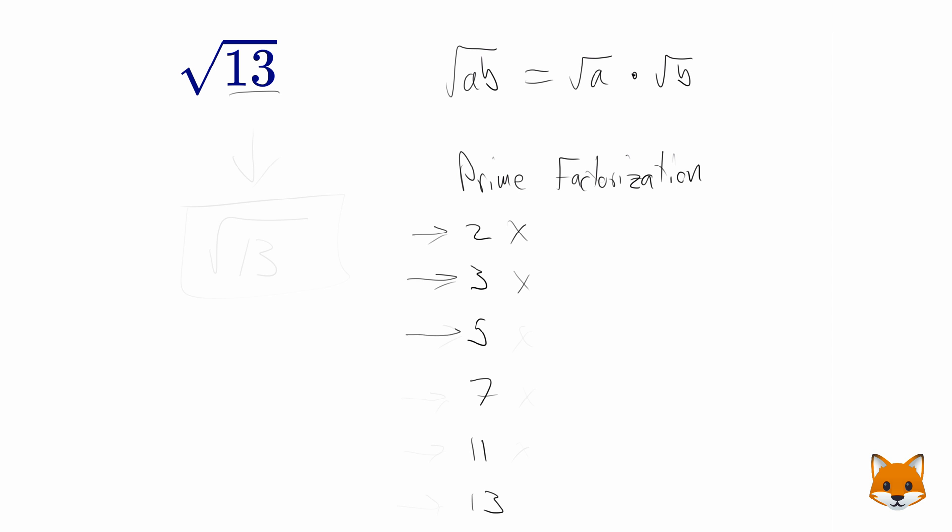Now is it divisible by 5? Nope, 2 times 5 is 10, 3 times 5 is 15, also not possible. Is it divisible by 7? Nope, 2 times 7 is 14, so it's not 13.